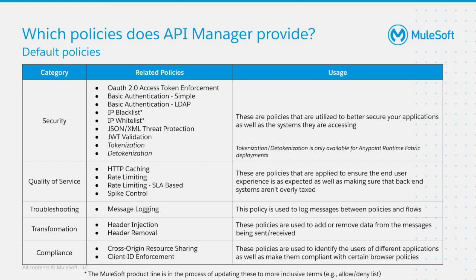You can find the link in the description below the video. Then we have the Quality of Service category, offering policies to help protect your backend systems from excessive traffic and to ensure that the end user experience is as expected. In this category, we have policies like HTTP caching, which lets you store HTTP responses for later reuse, to avoid multiple calls to a backend when responses normally don't change often. There are also policies for rate limiting, both SLA-based and non-SLA-based. The non-SLA-based policy lets you enforce a hard limit, whereas the SLA-based rate limiting policy lets you limit access from client applications based on their SLA. If you want to secure your backend systems from temporary spikes, you can use the spike control policy.